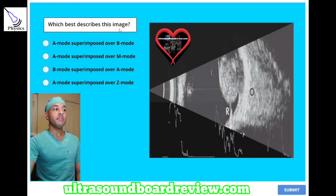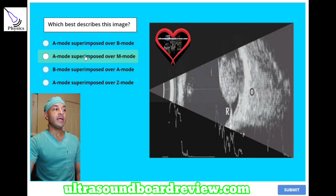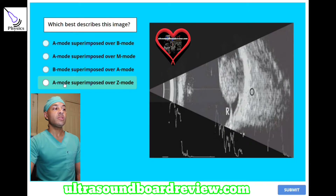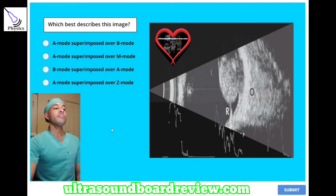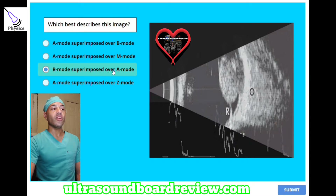Which best describes this image? A. A mode superimposed over B mode. B. A mode superimposed over M mode. C. B mode superimposed over A mode. Or D. A mode superimposed over Z mode. The answer is C, B mode superimposed over A mode.